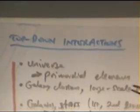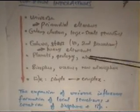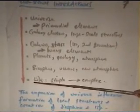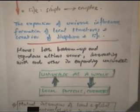So top-down interactions, what you have is the universe determining the primordial elements, the galaxy structure, the large-scale structure. It is this that then enables galaxies and stars to form the first and second generation of stars, the heavy elements. That then enables planets to form, geology, atmosphere to take place, providing the basis for biosphere, the oceans, the new atmosphere which replaces the old one and enables life to come in existence growing from simple to complex. The expansion of the universe influences the formation of local structure and the creation of the biosphere and life in all of the ways I have just described. It's playing a role all the time.